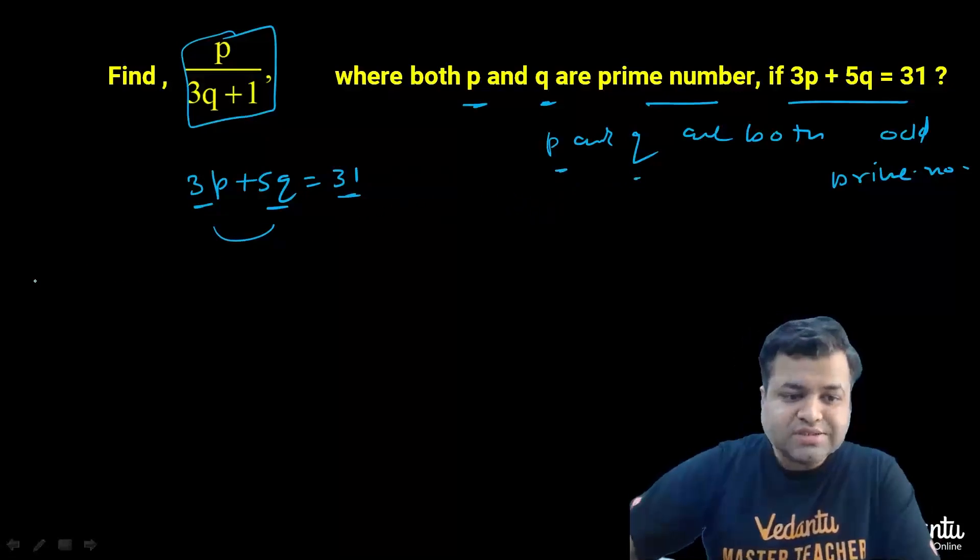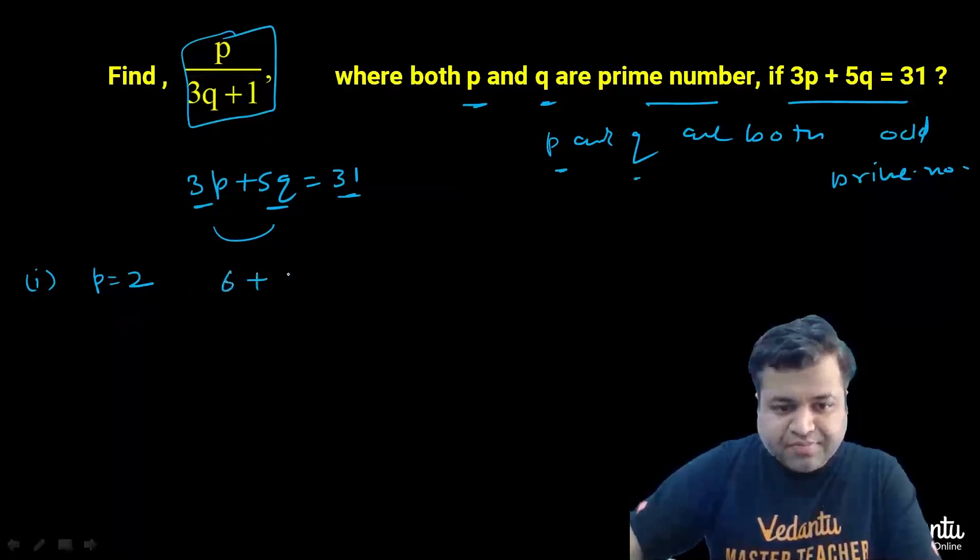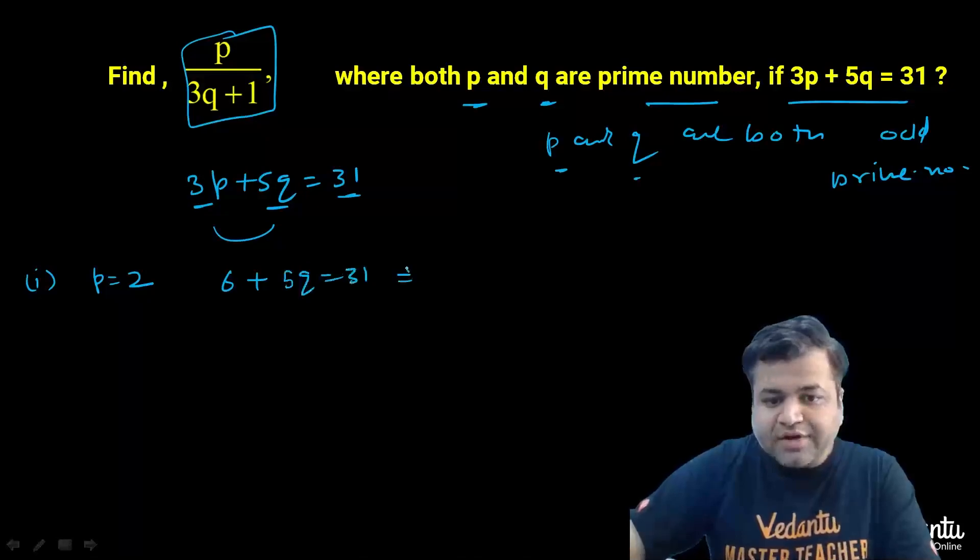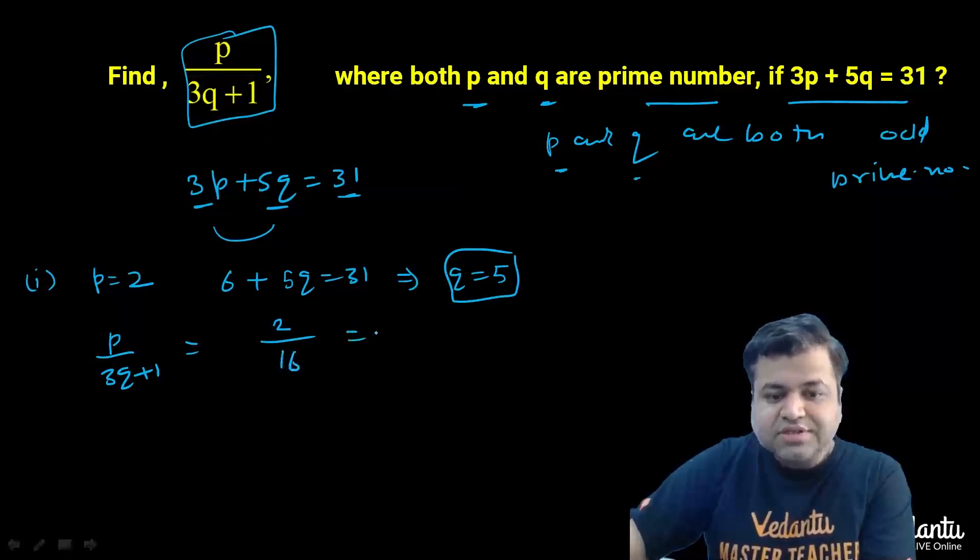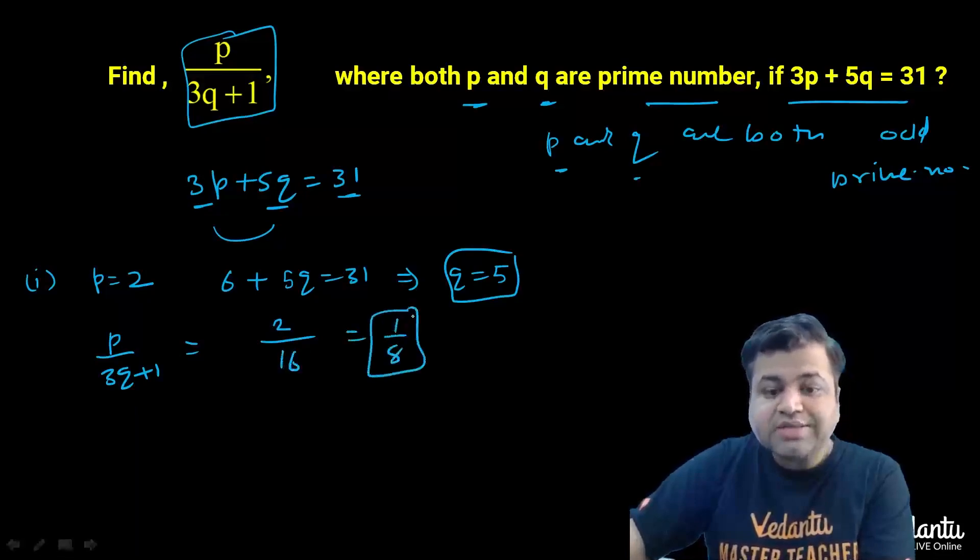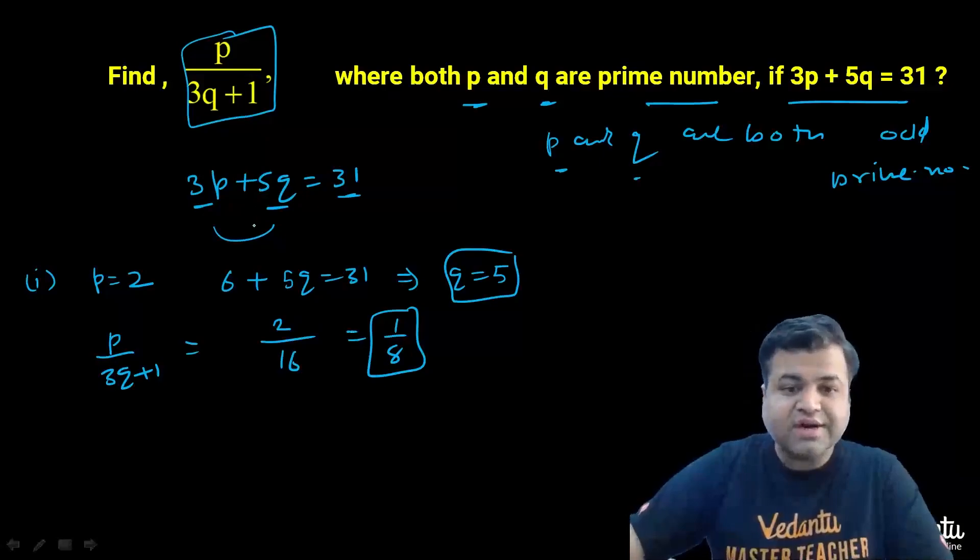So let's take two cases, case 1 and case 2. In case 1, when P equals 2, the equation converts to 6 plus 5Q equals 31. That simply implies Q is 5. And in that scenario, P upon 3Q plus 1 equals 2 upon 16, which is 1 upon 8. So 1 upon 8 is one of the possible values. Here P and Q both are prime numbers.